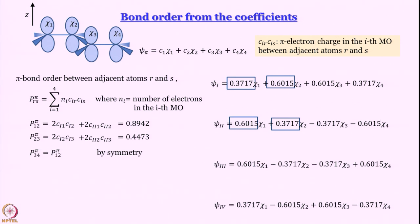Today we have learned that in butadiene, using Huckel theory, we can work out the energies and wave functions, and from the wave functions we can work out the electron distribution — it turns out electrons are distributed uniformly over the molecule — and also we can work out the bond order. When you go to bigger molecules like benzene, a similar treatment is extended.